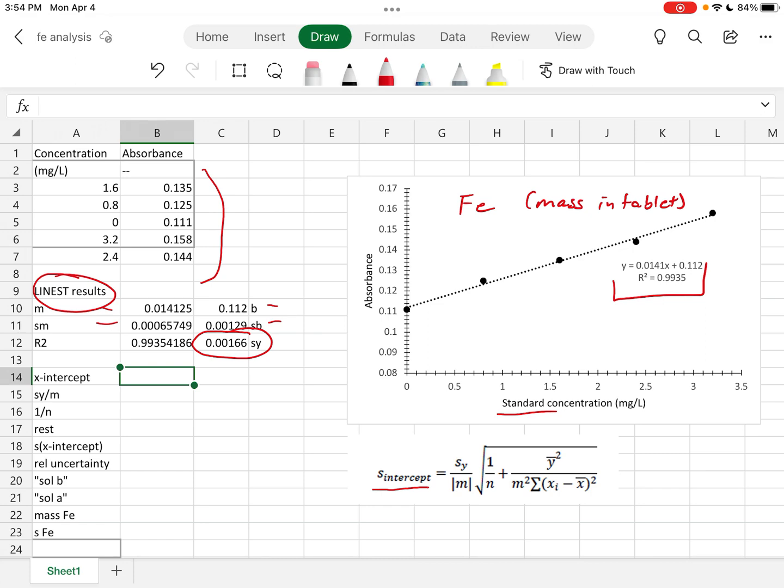First and foremost we need to get the x-intercept because the x-intercept is the concentration of the unknown solution that we analyzed, and it's actually the absolute value of the x-intercept. So this is equal to b over m.